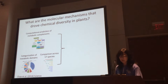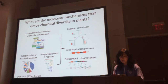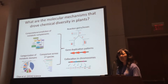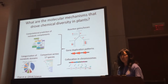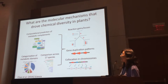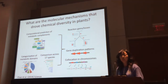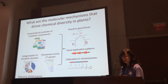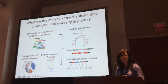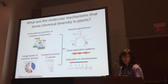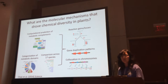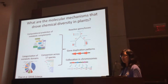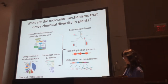Some of this work has been published recently, but today I'm going to talk about some recent findings that have not been published yet. These have to do with divergence patterns of metabolic pathways in terms of reaction gains and losses, duplication patterns of metabolic genes, and co-location of metabolic genes on chromosomes of plant genomes.